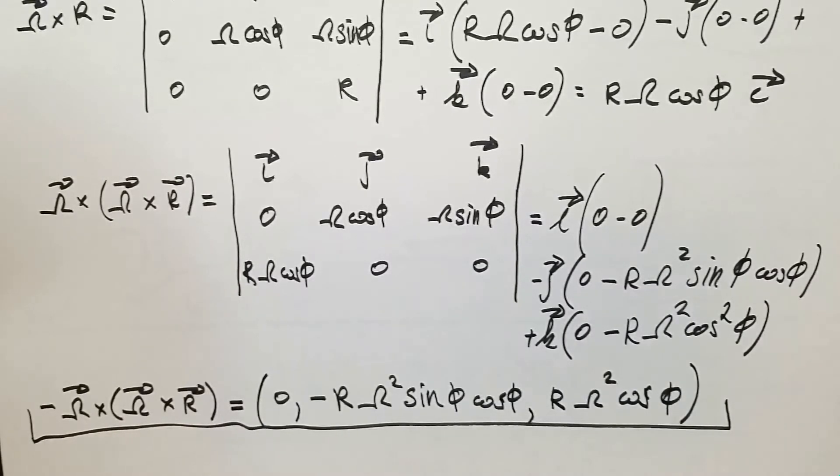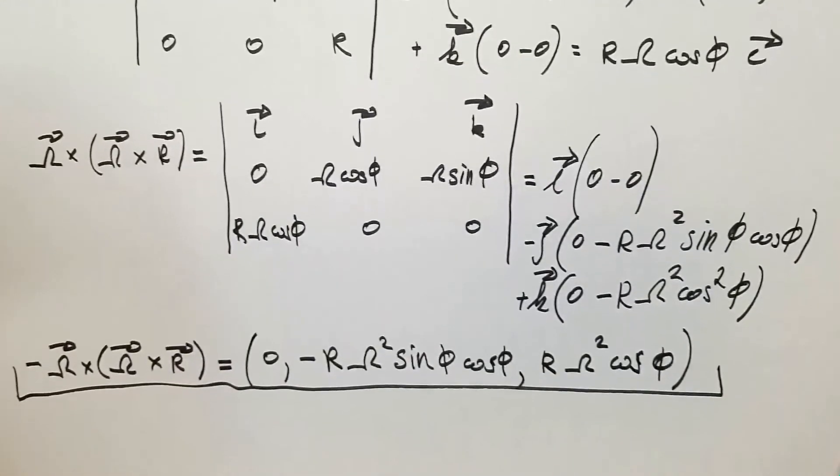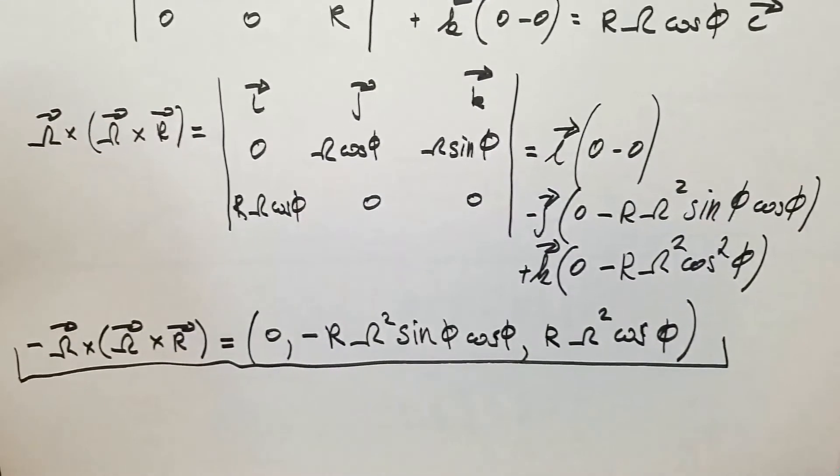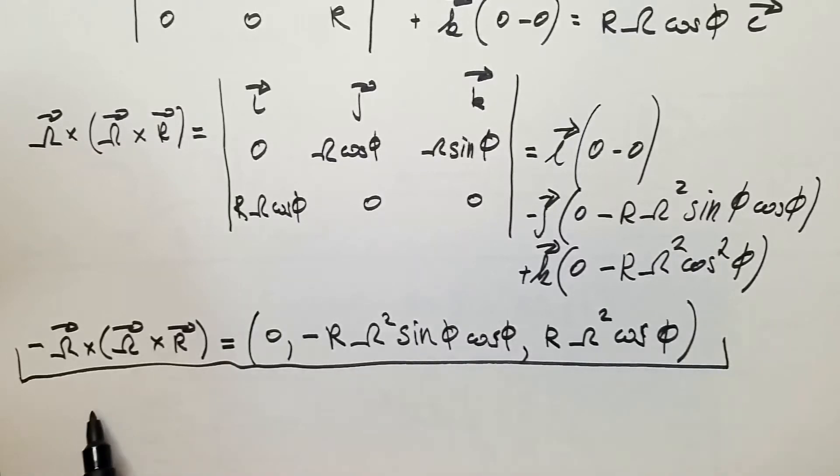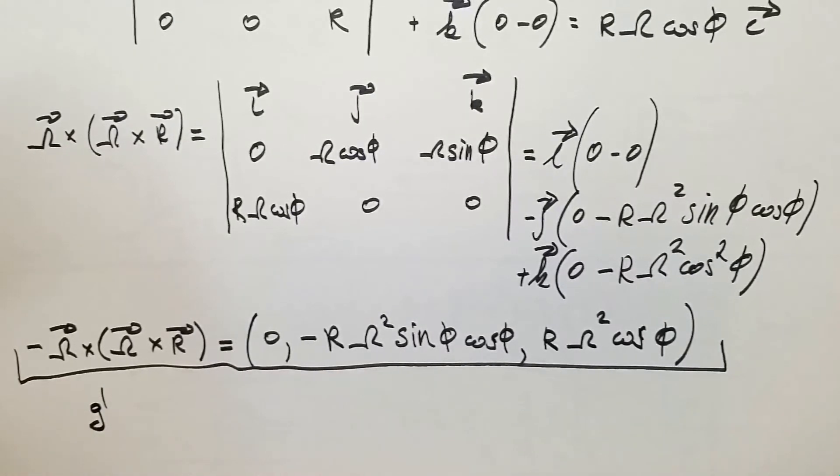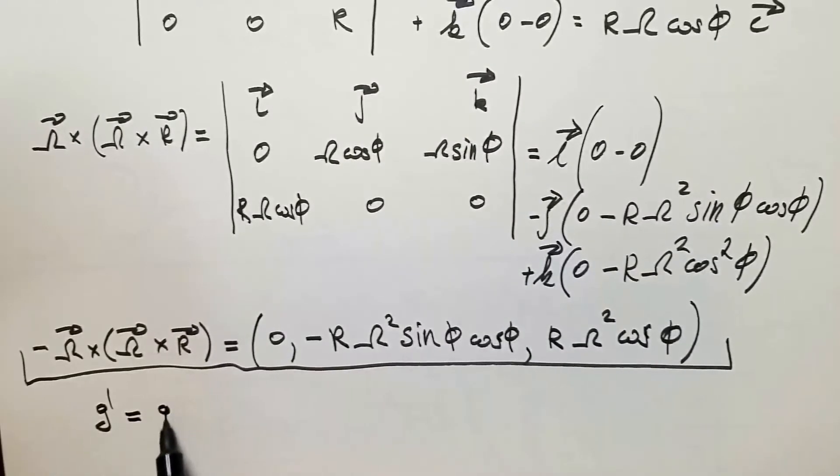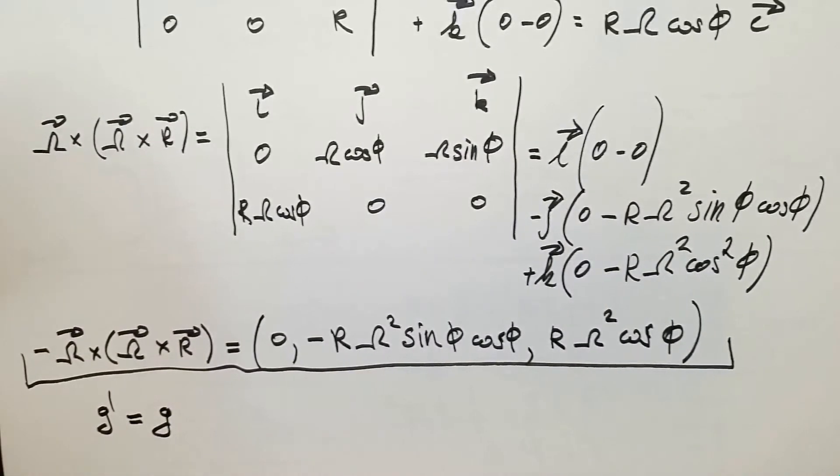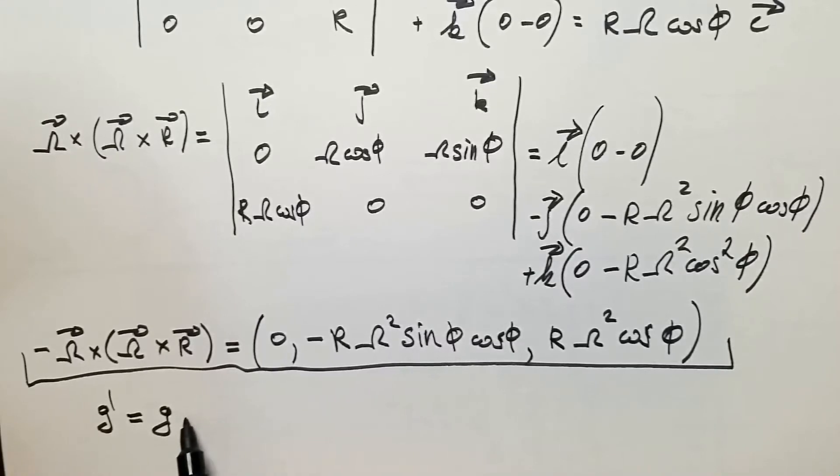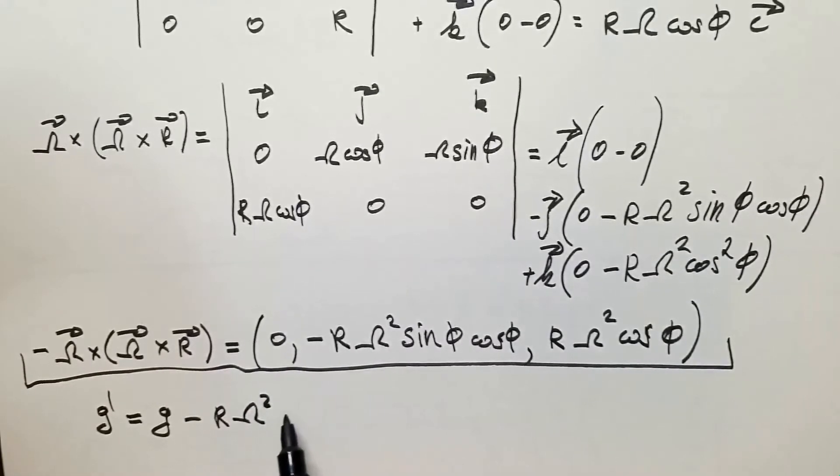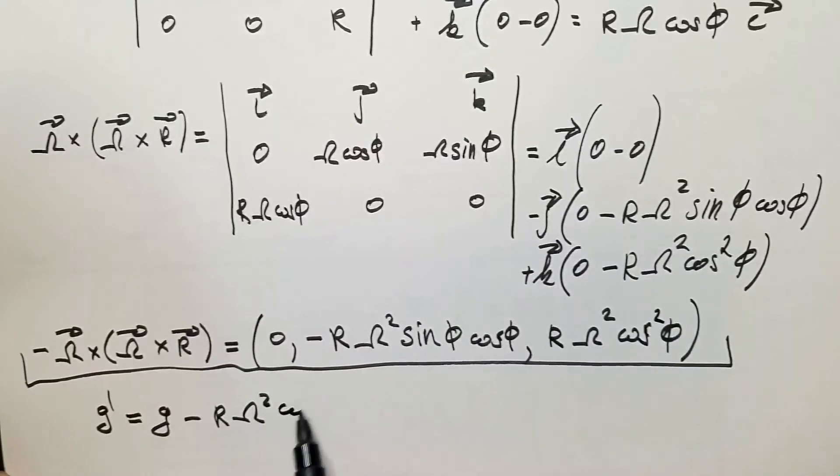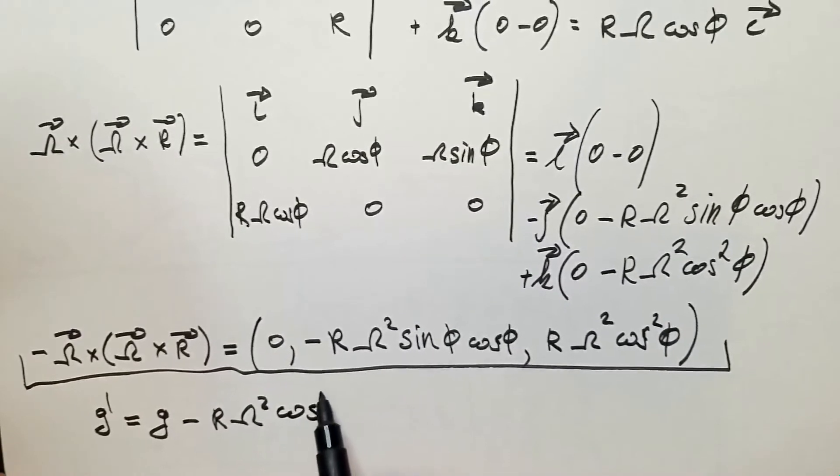Now, we can finally calculate the apparent gravity if we wish. Because in the Z direction, only this term will contribute to my apparent gravity. And I will call apparent gravity G prime. That will be G gravity, real gravity, minus this term R omega squared cosine squared phi.